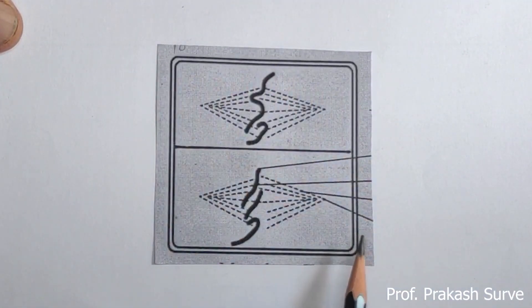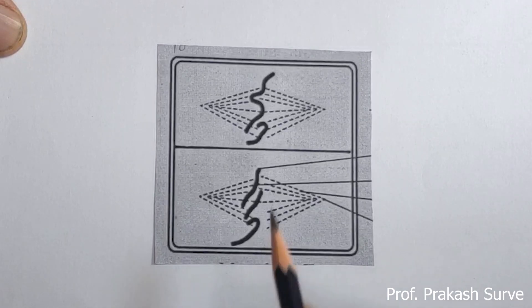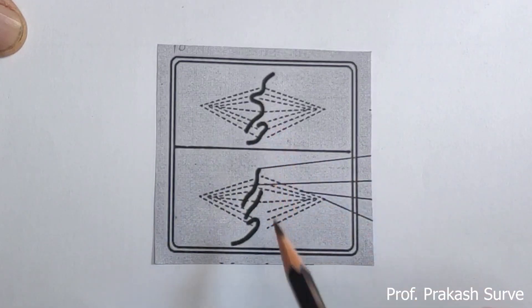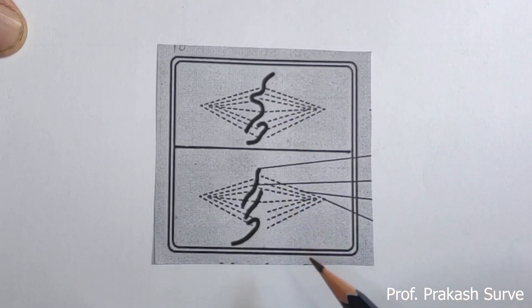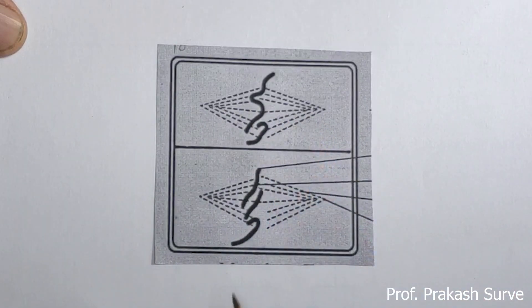Next is metaphase two of meiosis two. What we observe: all the chromosomes are arranged at the equatorial plane — an imaginary line forming the equatorial plane — and this is at a right angle to the previous division. The chromosomes are arranged so that the centromere lies on the plane with the arms towards the pole. Spindle formation also takes place.